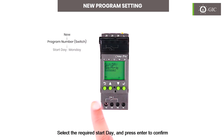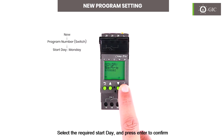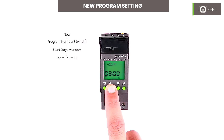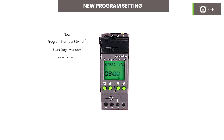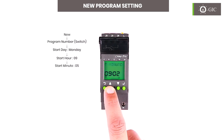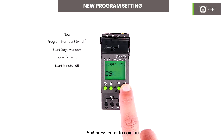This shows the program number. Press enter to confirm. Select the required start day and press enter to confirm. Select the required start hour and press enter to confirm. Select the required start minute and press enter to confirm.